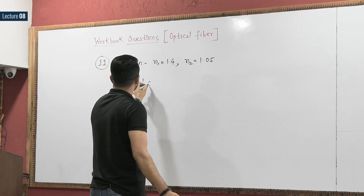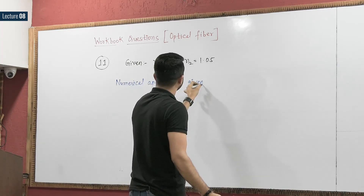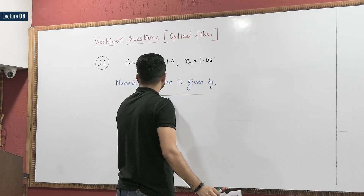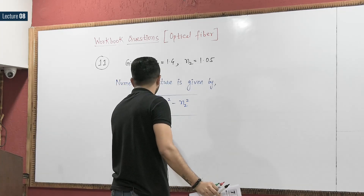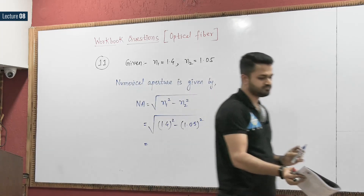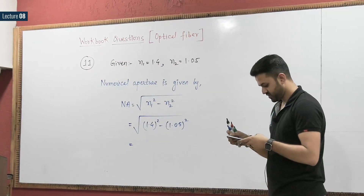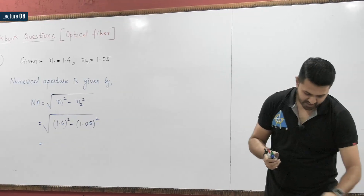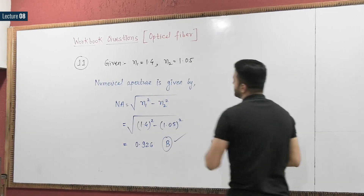The numerical aperture, as we have already derived, is given by NA = √(n1² − n2²). So this is √(1.4² − 1.05²). Calculating: 1.4 squared minus 1.05 squared gives 0.926. As you can see from the options, 0.926 is option B. So the correct answer is option B for question number 11.